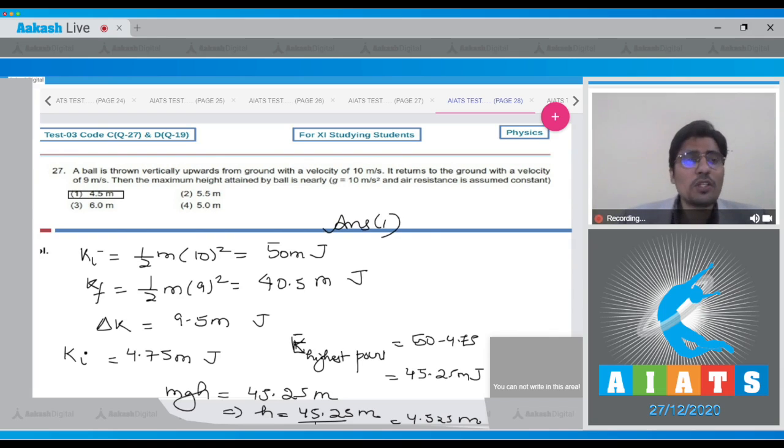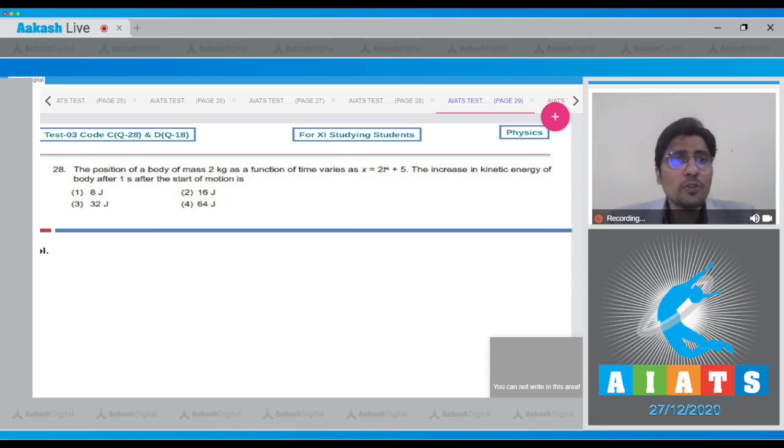Now, let us move to question number 28. Question 28 says, the position of a body of mass 2 kg as a function of time varies as x is equal to 2t to the power 4 plus 5. The increase in kinetic energy of the body one second after the start of the motion is. This one, the velocity is written as the differentiation of position, so dx by dt. So this will be equal to 8t cube.